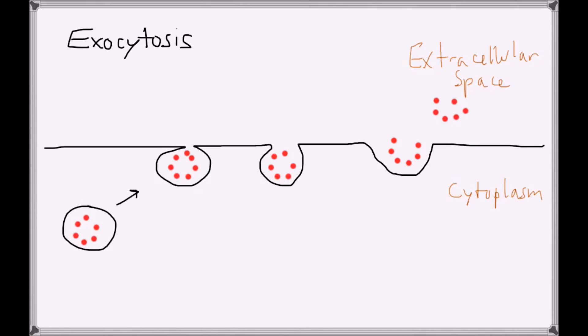After water molecules are displaced, the phospholipid bilayer of the vesicle fuses with the phospholipid bilayer of the membrane. This allows the contents of the vesicle to be released into the extracellular space.